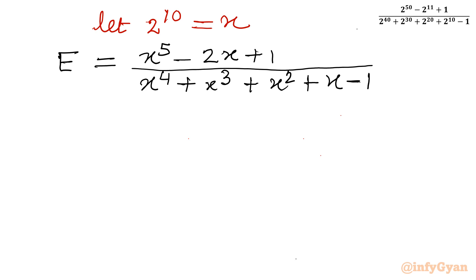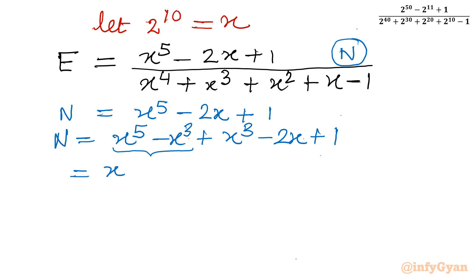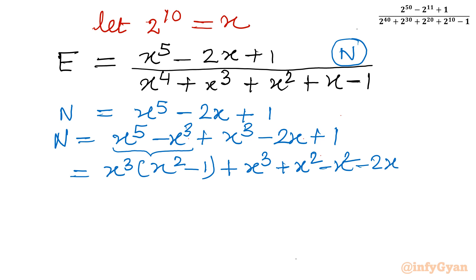Now I'll consider the numerator separately. The numerator N equals x power 5 minus 2x plus 1. Using algebraic manipulation, I take x power 5 minus x cubed, then add x cubed minus 2x plus 1. From the first two terms, x cubed is common, giving x cubed times (x squared minus 1). For the remaining terms x cubed minus 2x plus 1, I note that x equals 1 is a solution, so I rewrite: x cubed plus x squared minus x squared minus 2x plus 1.